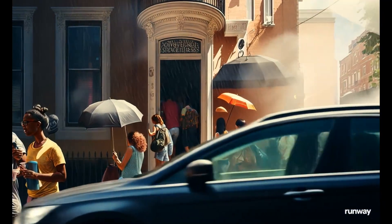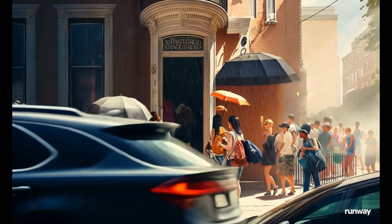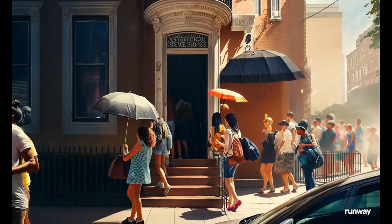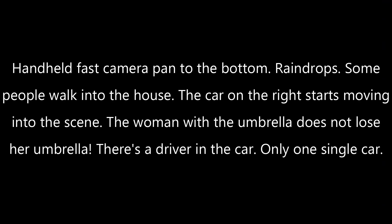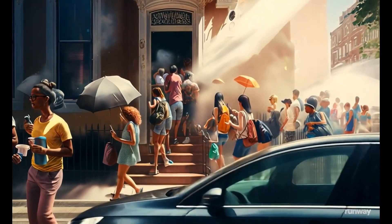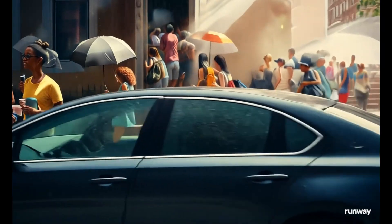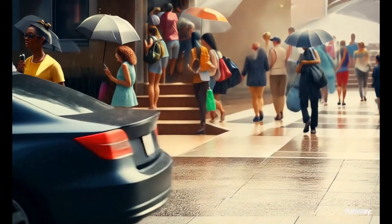Now let me see if the camera can invent the surface of the street. My next prompt: handheld fast camera pan to the bottom, raindrops, some people walk into the house, the car on the right starts moving into the scene, the woman with the umbrella does not lose her umbrella, driver in the car, only one single car. Excellent.